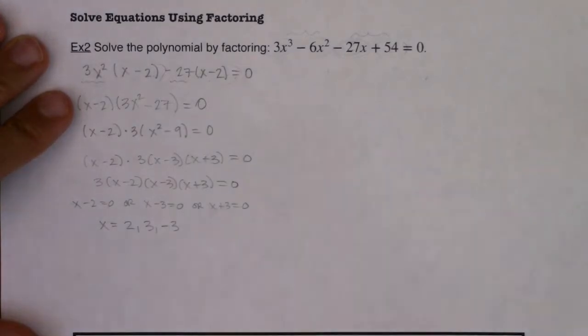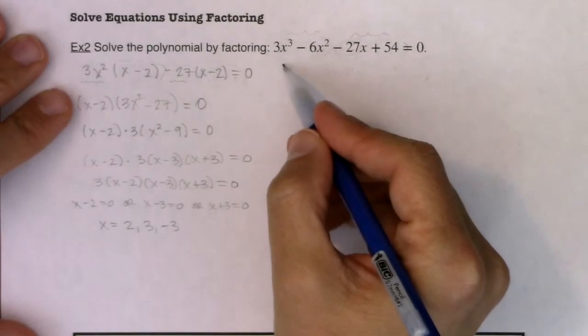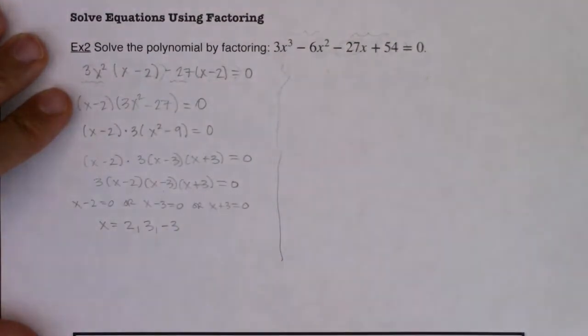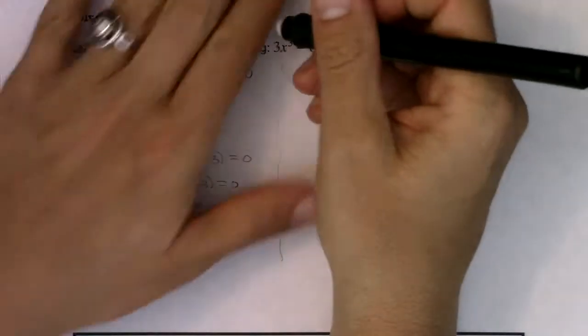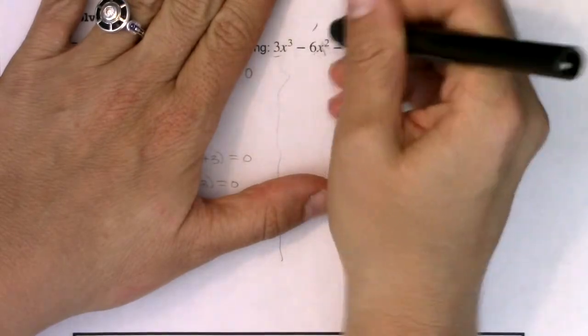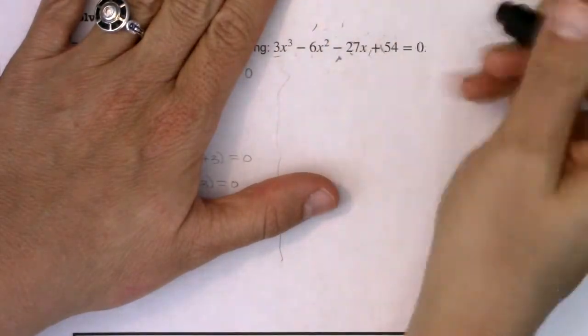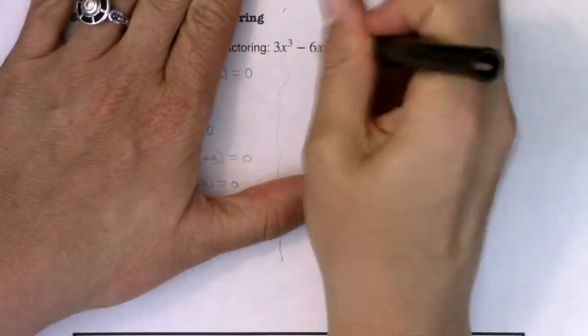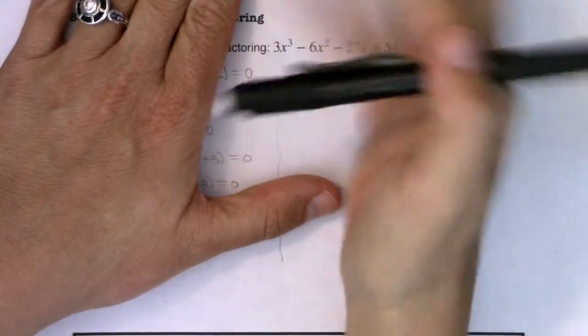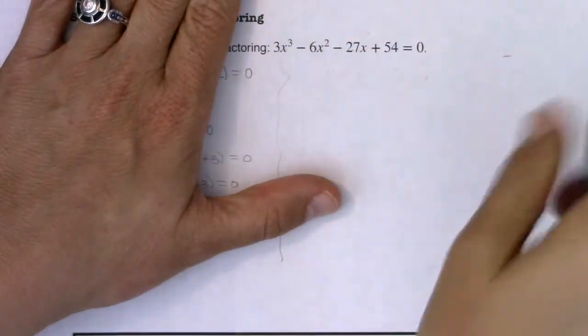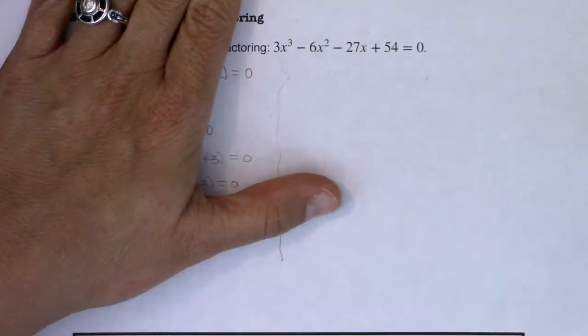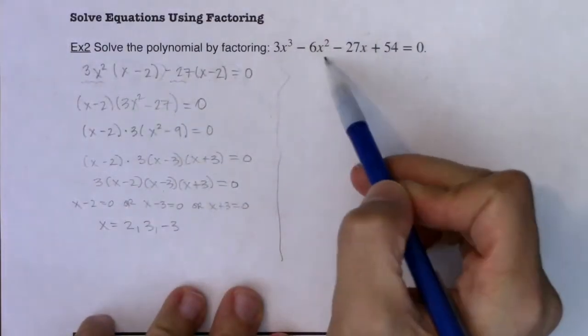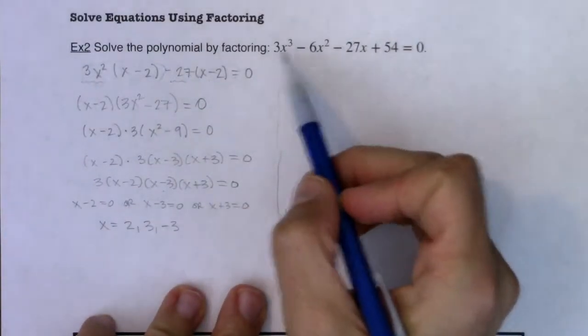Okay so this was all fine and good. This was factoring by grouping right out the gate. I want to show you how I probably would have done it. I'm going to get the same answer just a slightly different method. So for me when I start when I look at a polynomial and I want to factor it the first thing I do is look for a GCF.